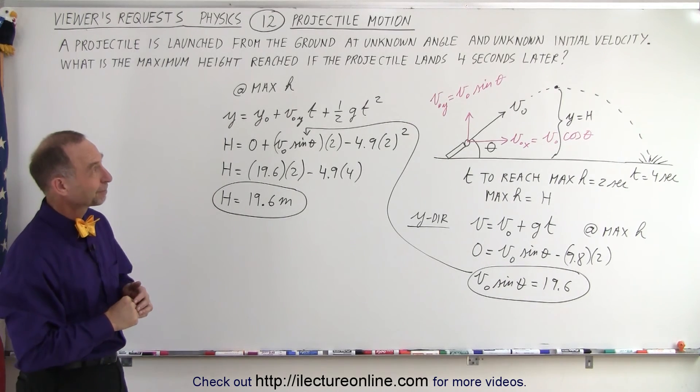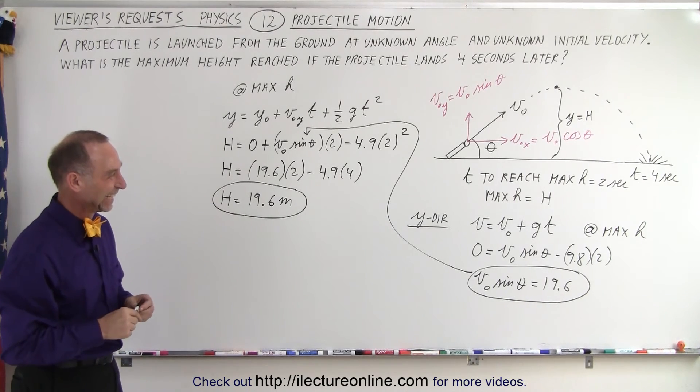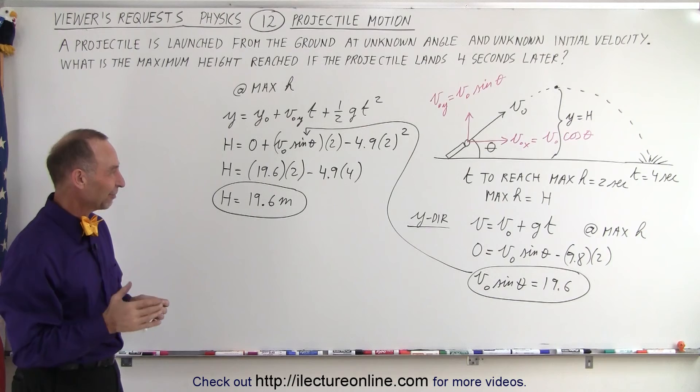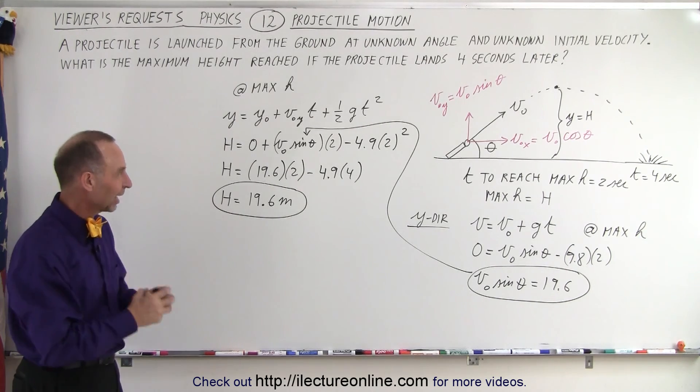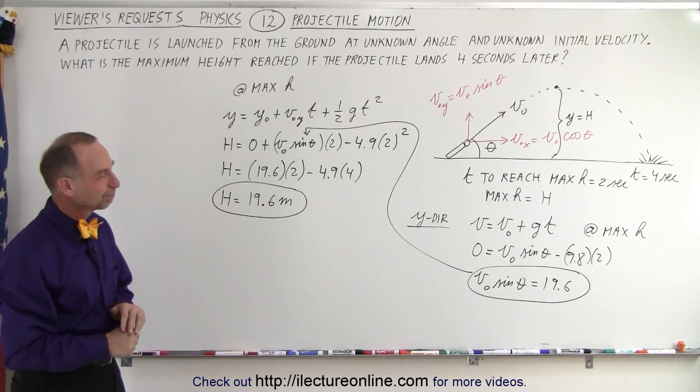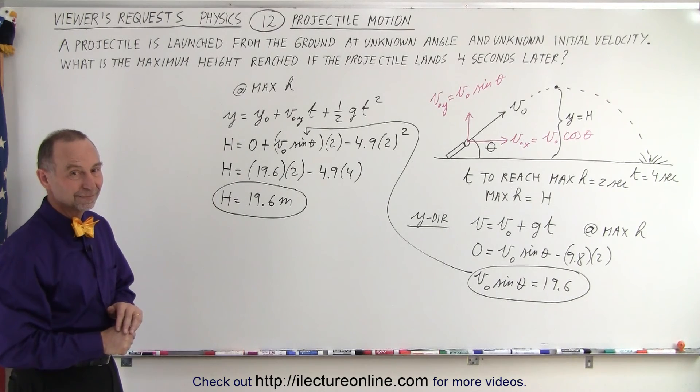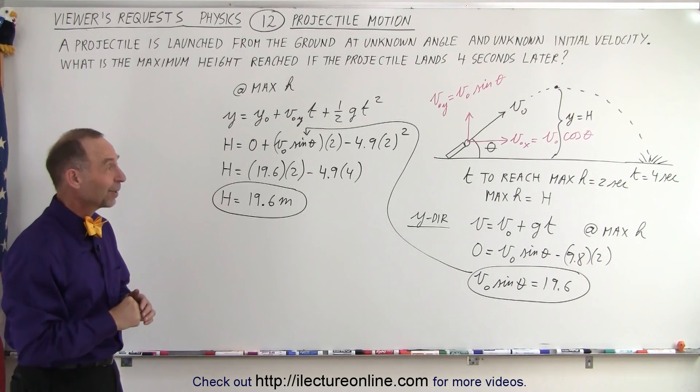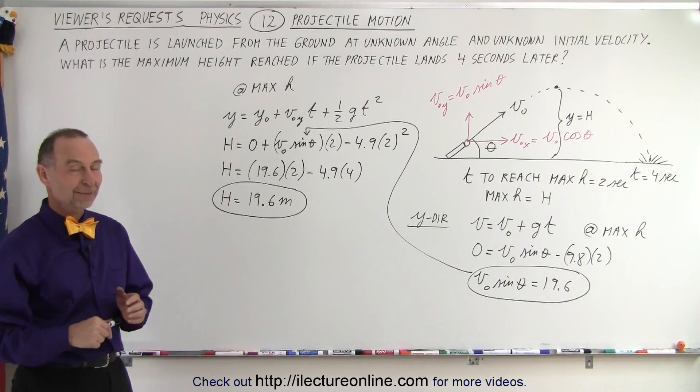Pretty nifty, huh? All we have to realize is we don't have to solve for v initial by itself or sine of theta by itself, but the product together, which appears in both equations. That makes it easy. And knowing that maximum height is reached at the halfway point in time. That's it.